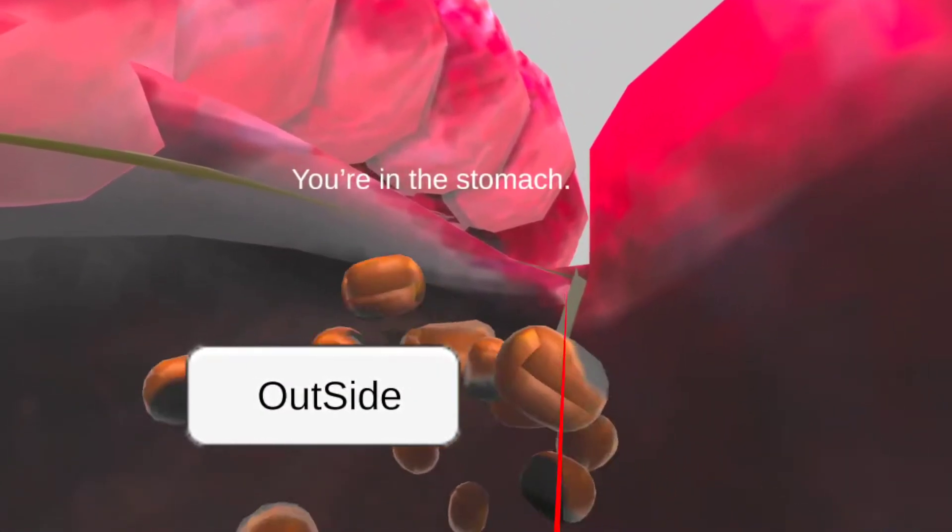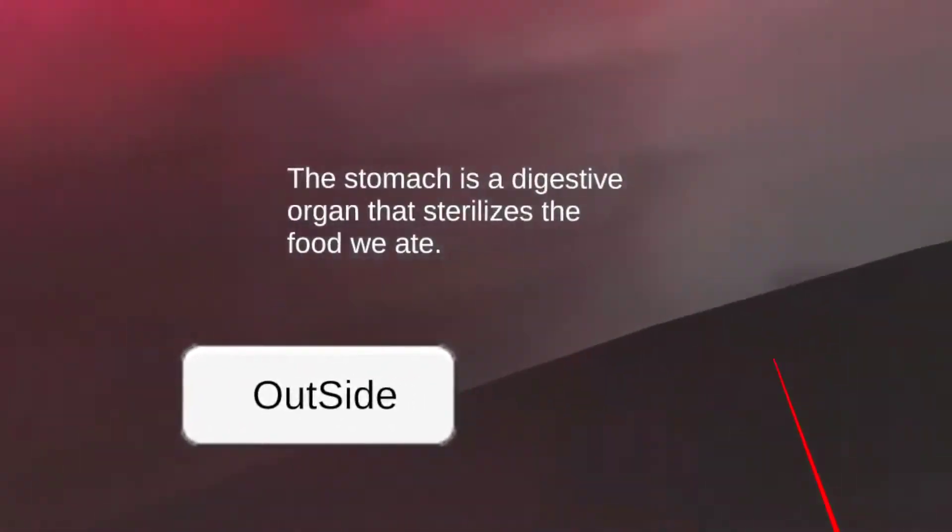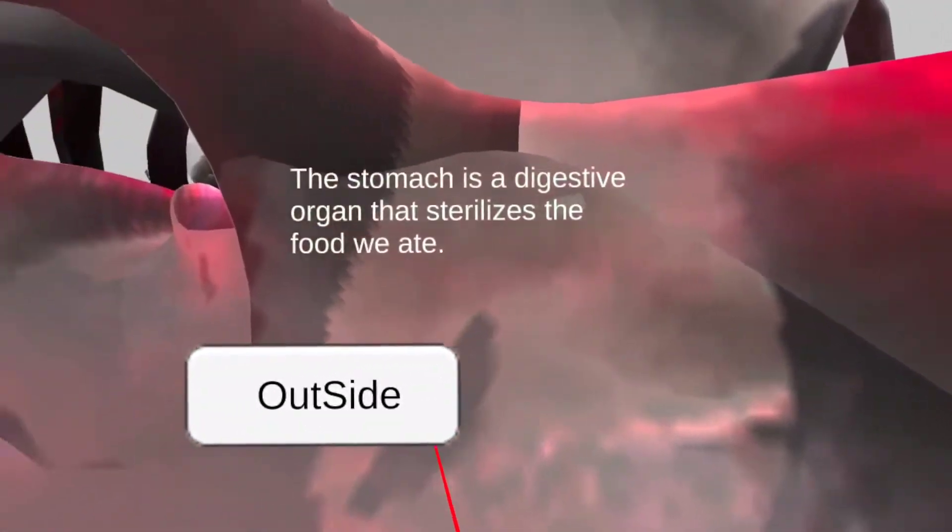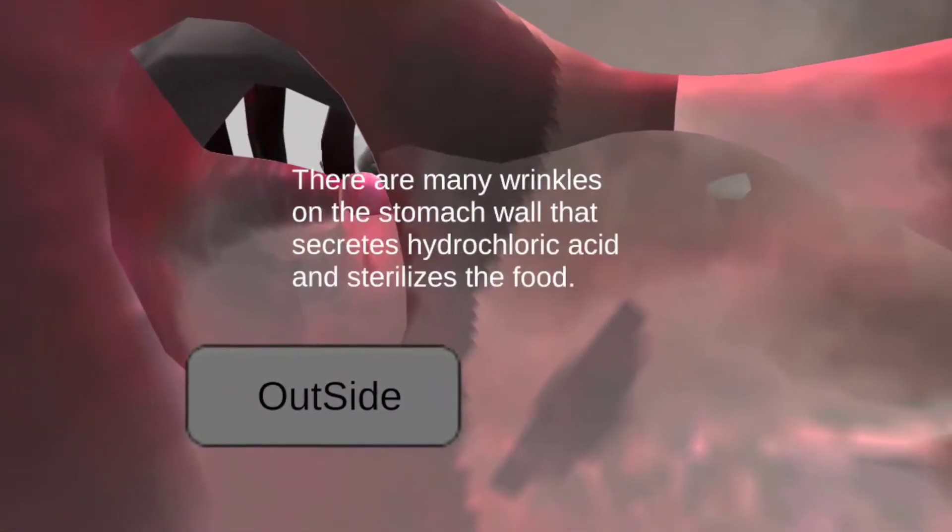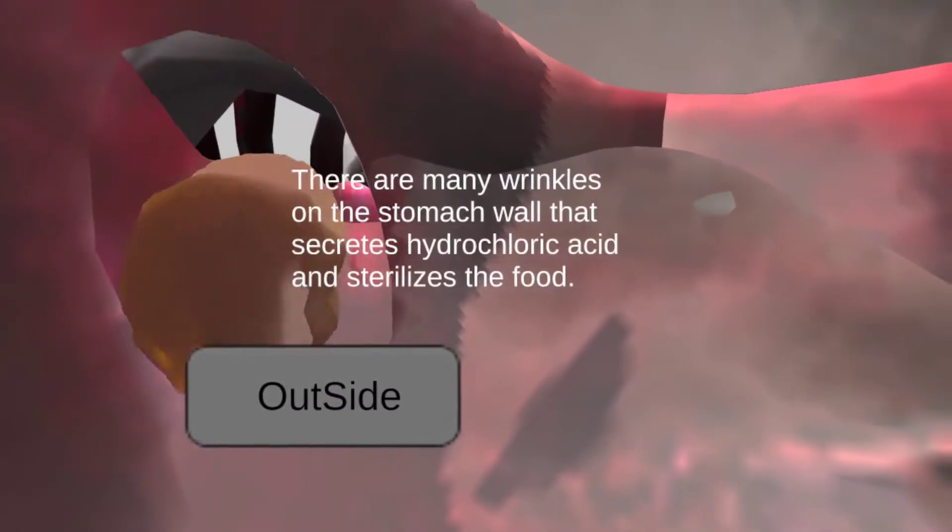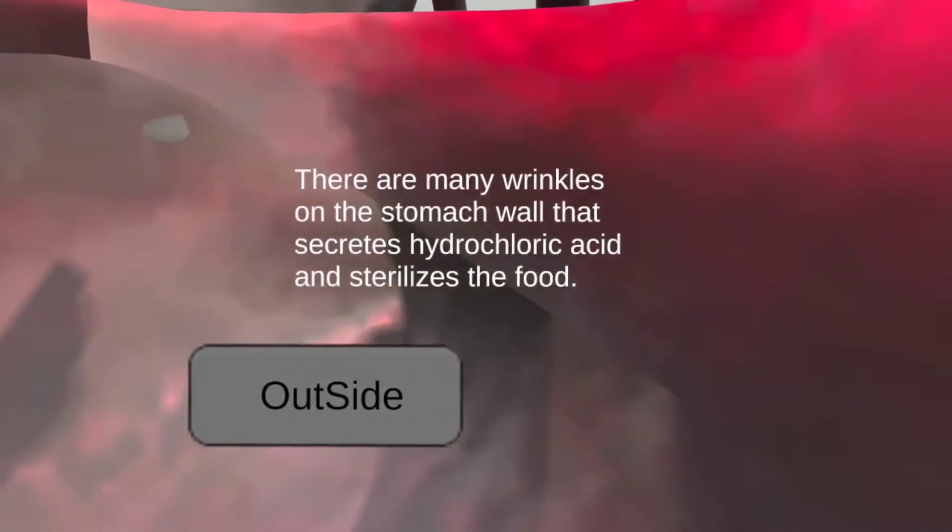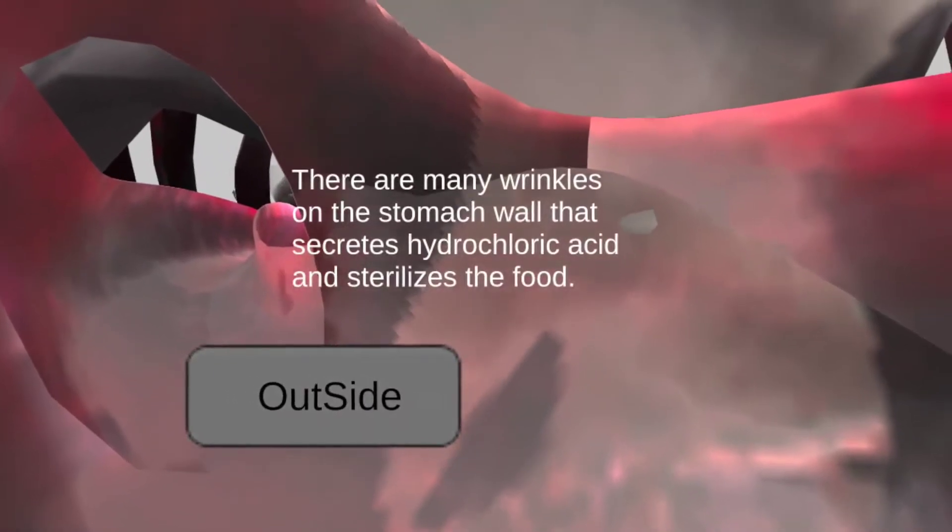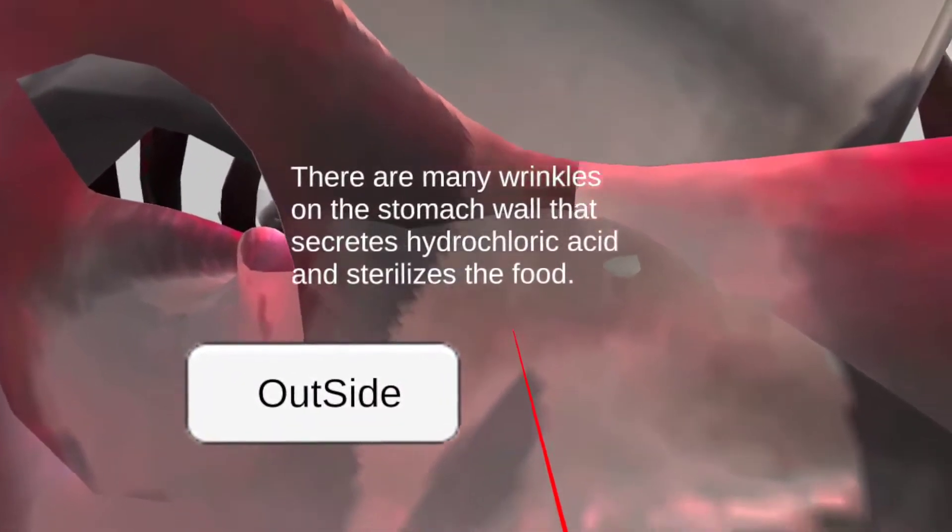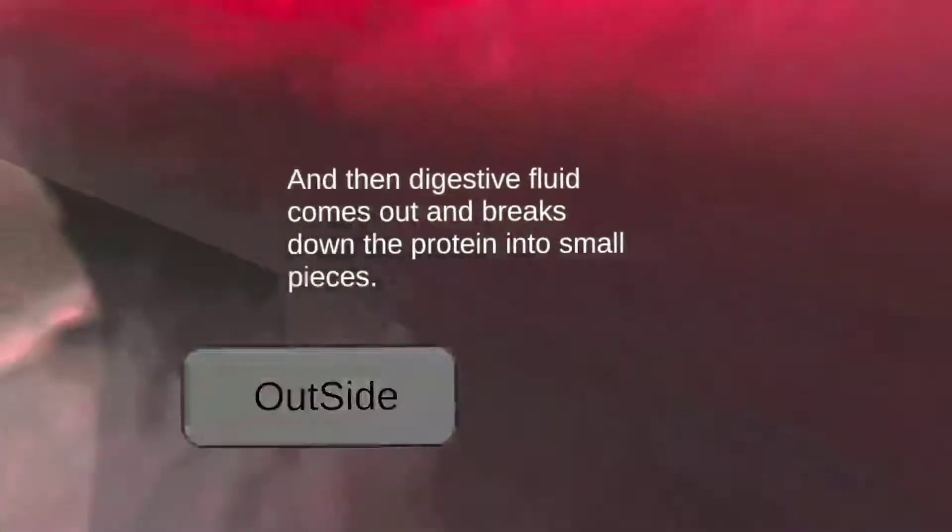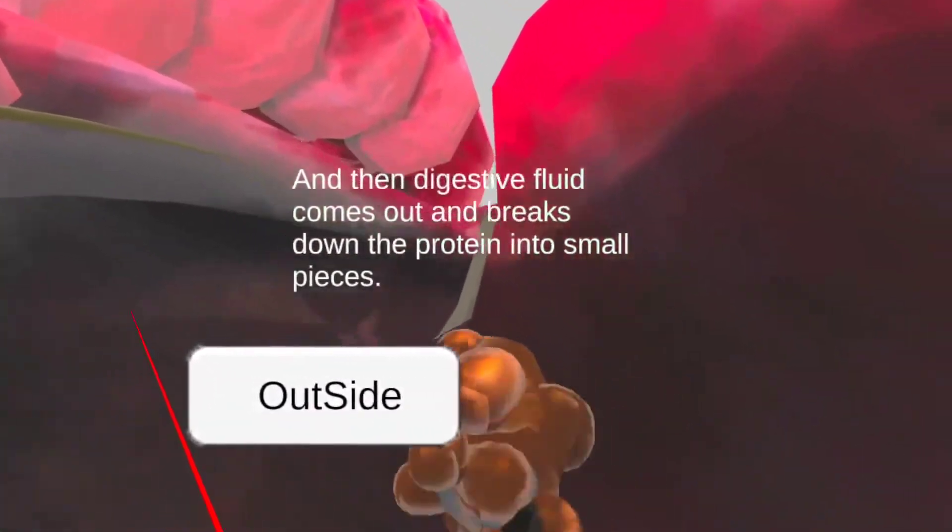You're in the stomach. The stomach is a digestive organ that sterilizes the food we ate. There are a lot of wrinkles on the stomach wall. It secretes hydrochloric acid and sterilizes the food. Digestive fluid comes out and breaks down the protein into small pieces.